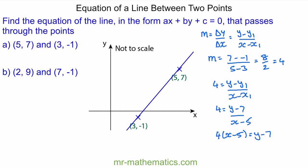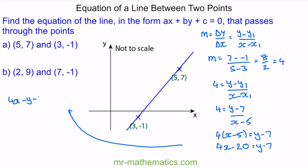We'll expand the brackets: 4x minus 20 equals y minus 7. We'll make the equation equal to zero, so 4x minus y minus 13 is equal to zero, and this is the equation of this line.